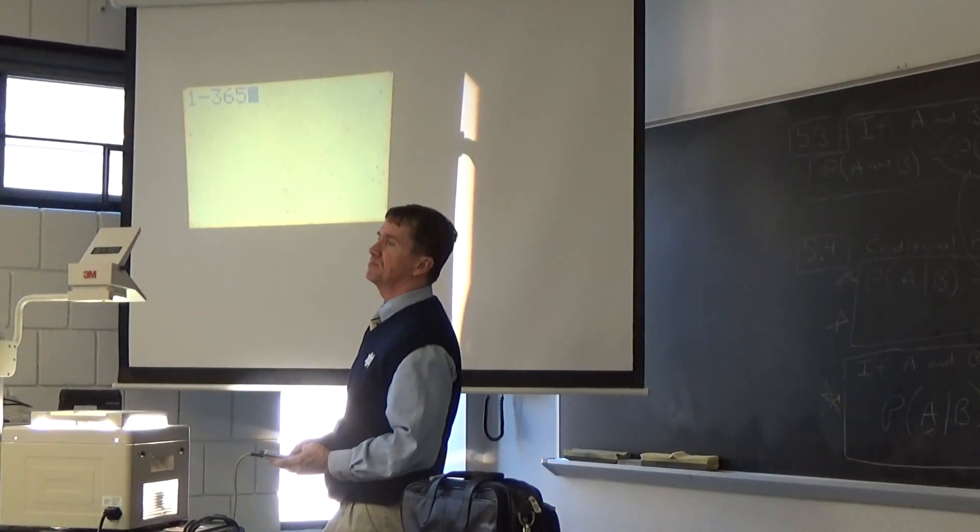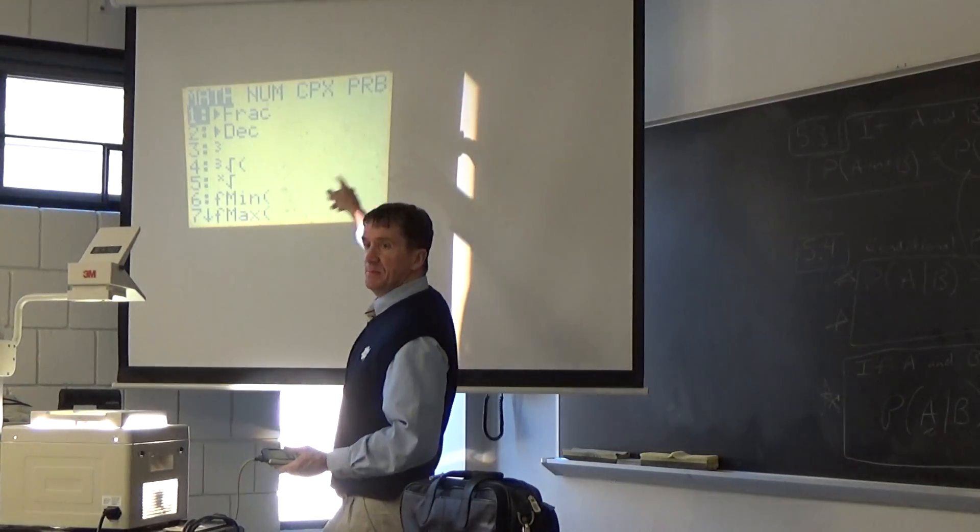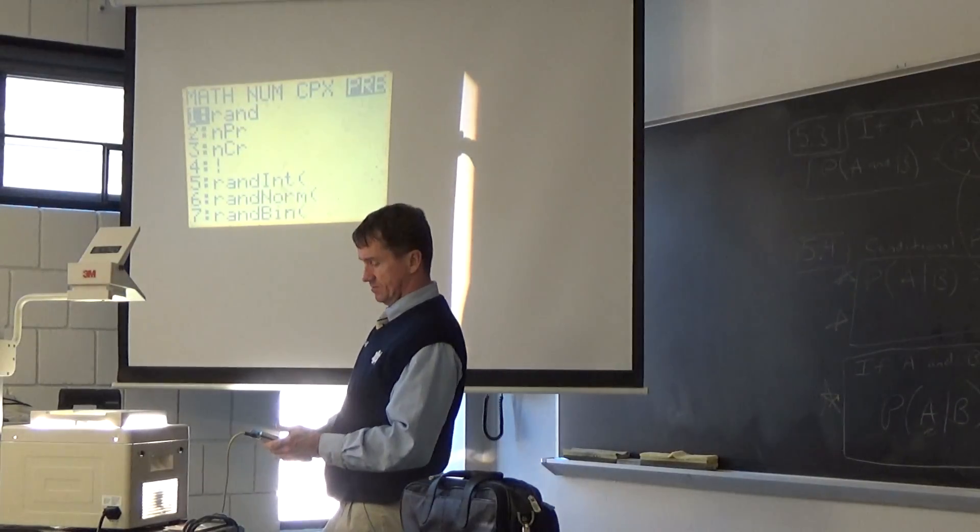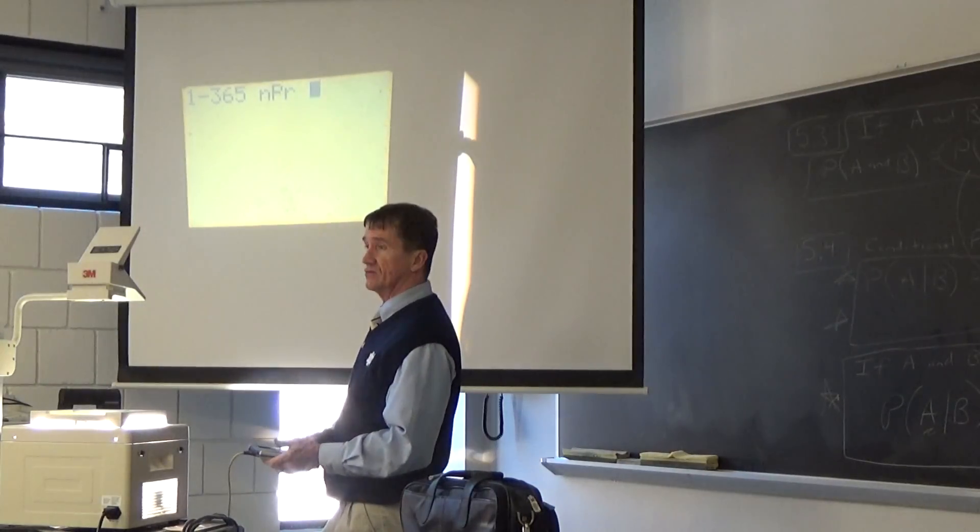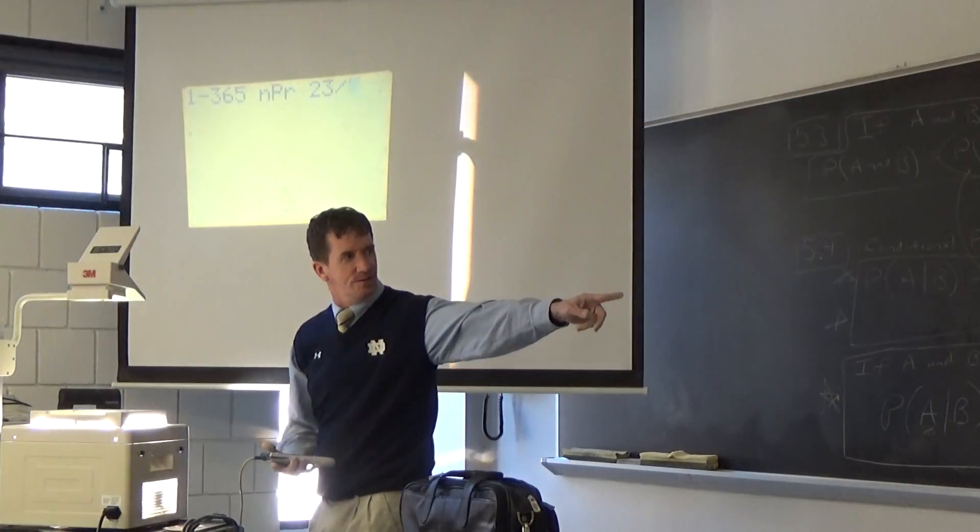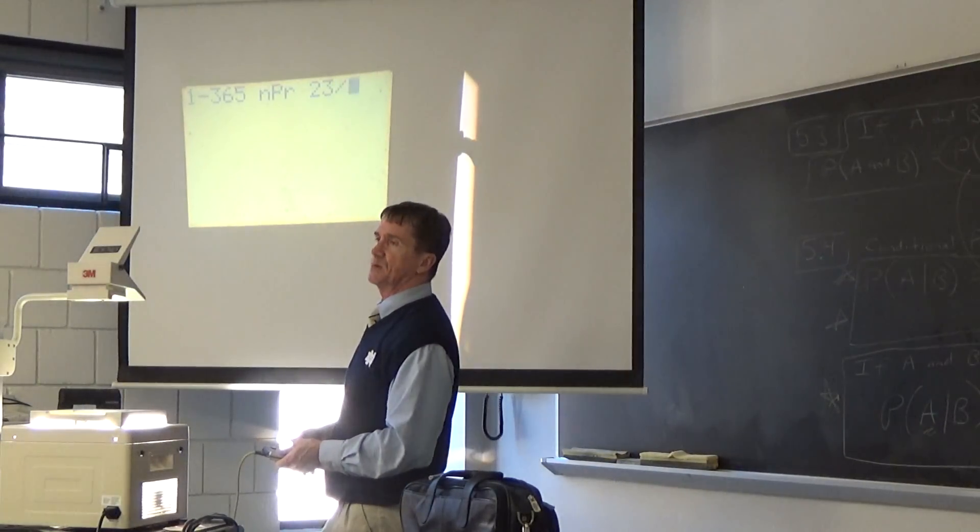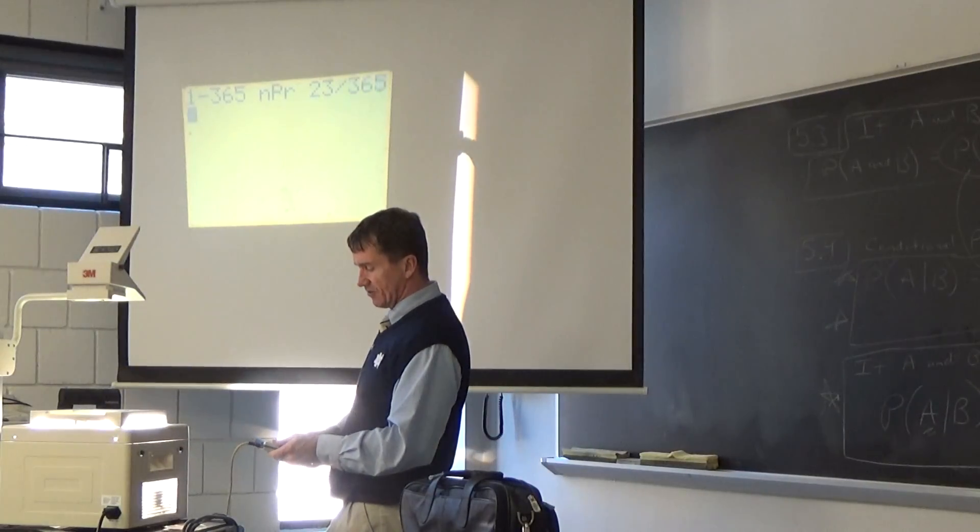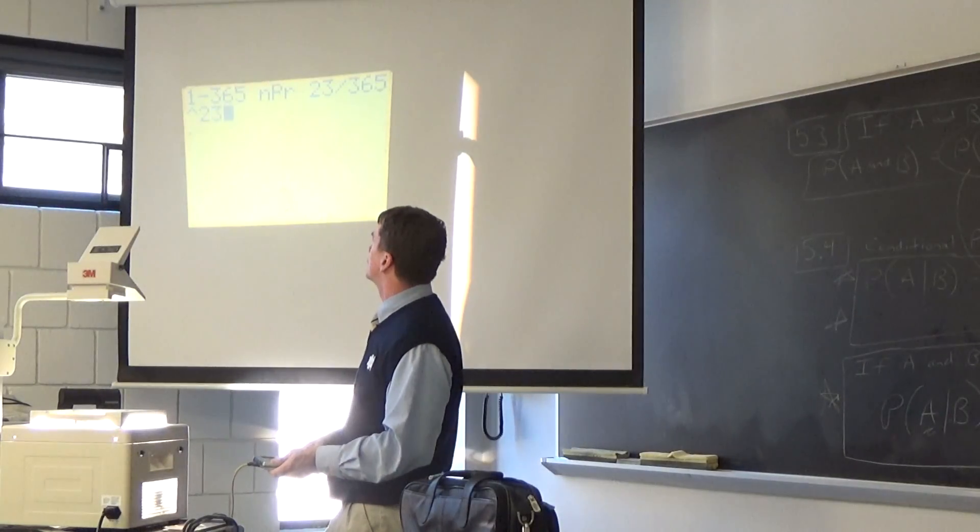I'm going to hit the math button. I'm going to arrow over to PRB. Everyone see PRB? And then number two. And then I'm going to type that 23. Now I have to divide out what? So that's 365 NPR 23 means that's a permutation formula. And I divide out 365 raised to the? 22. Okay.